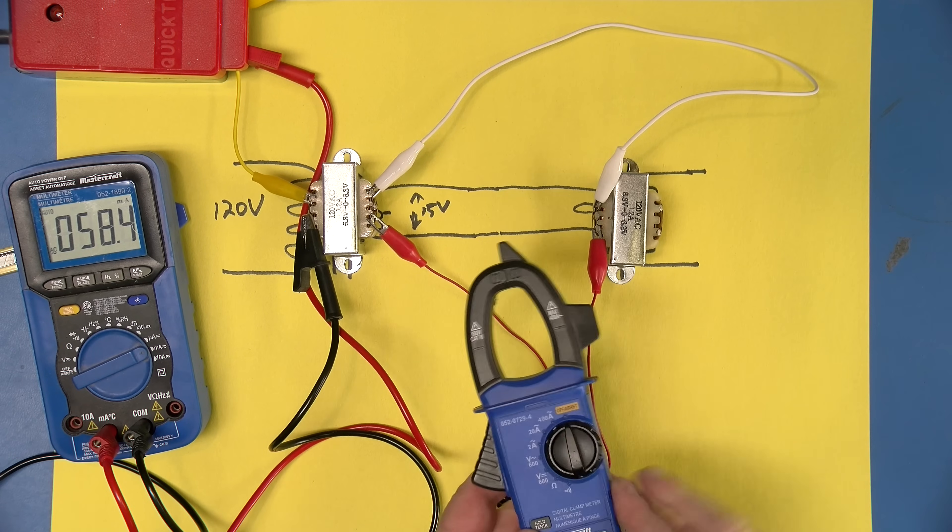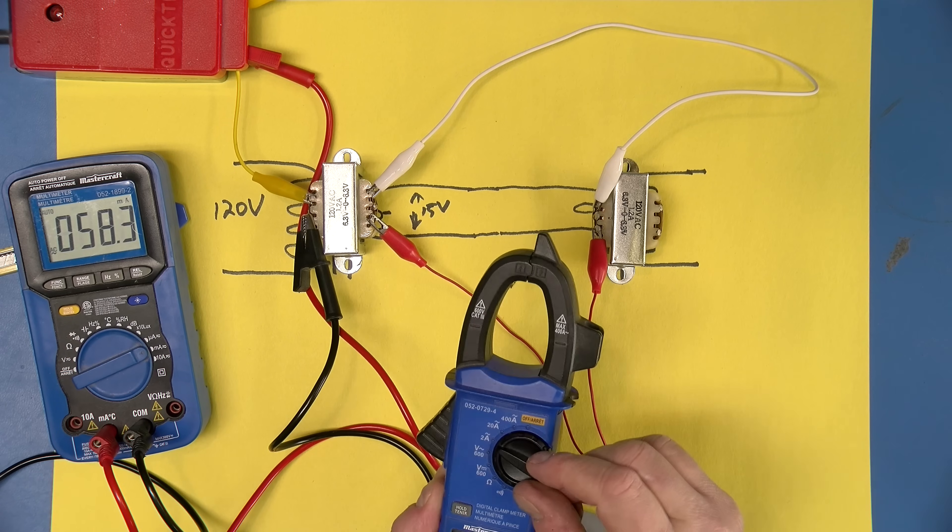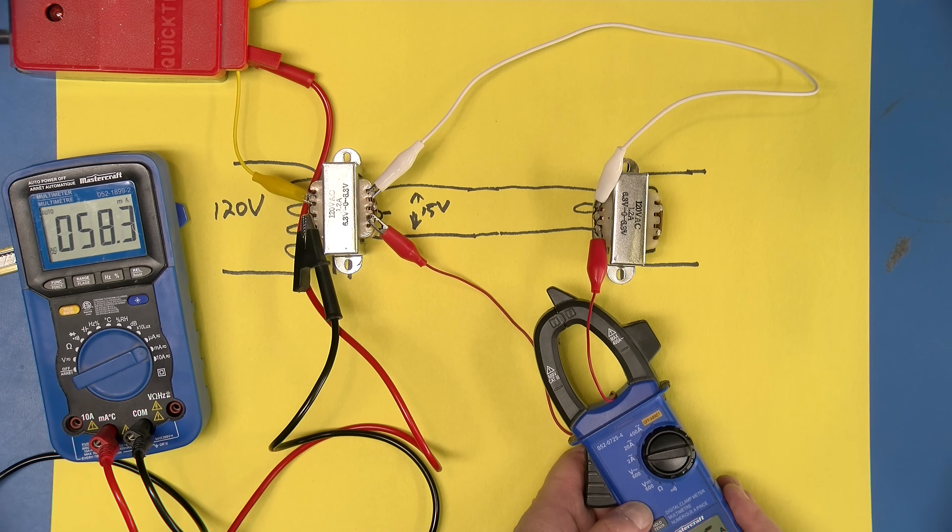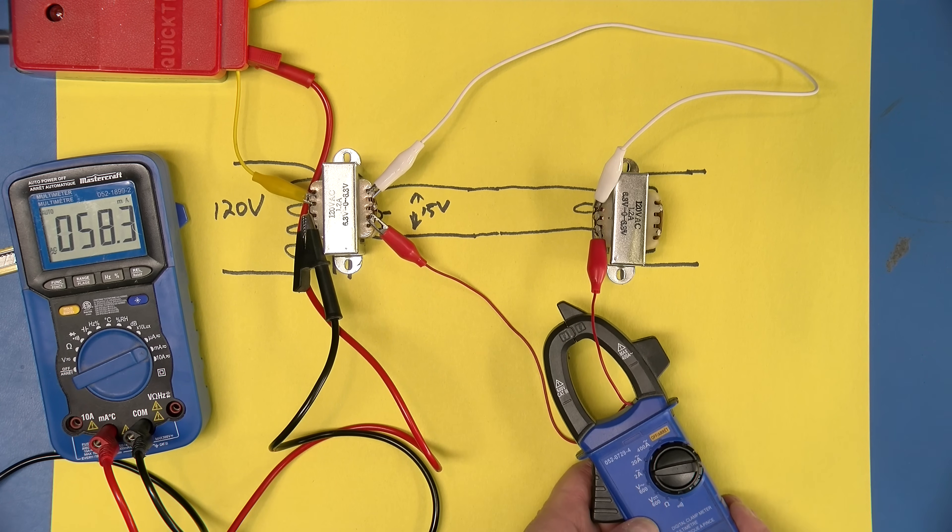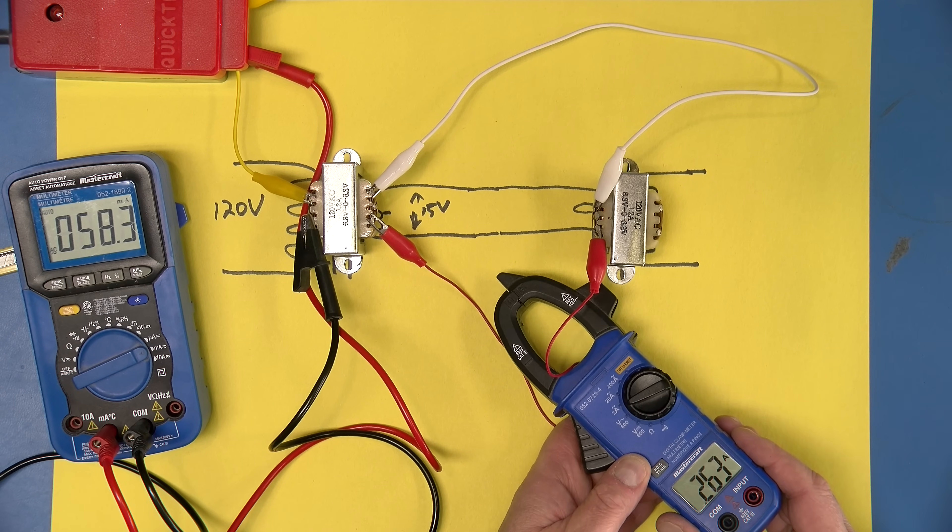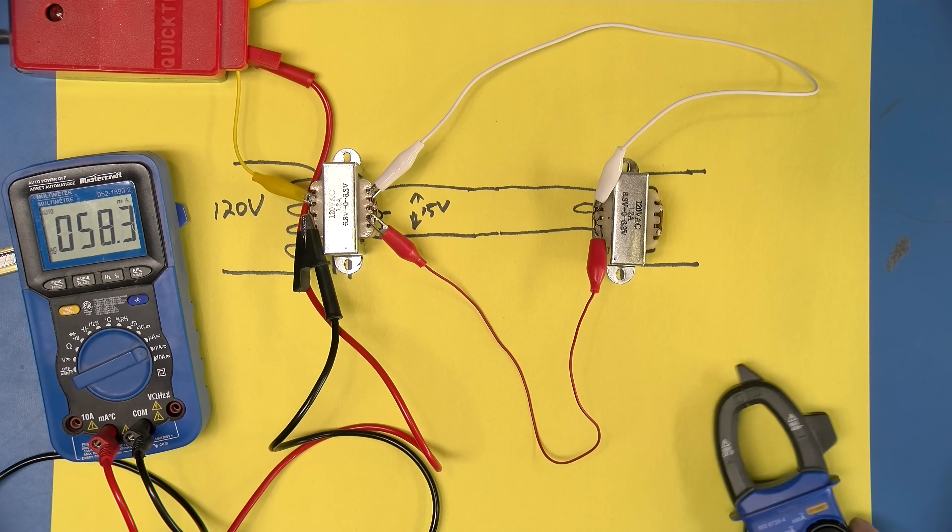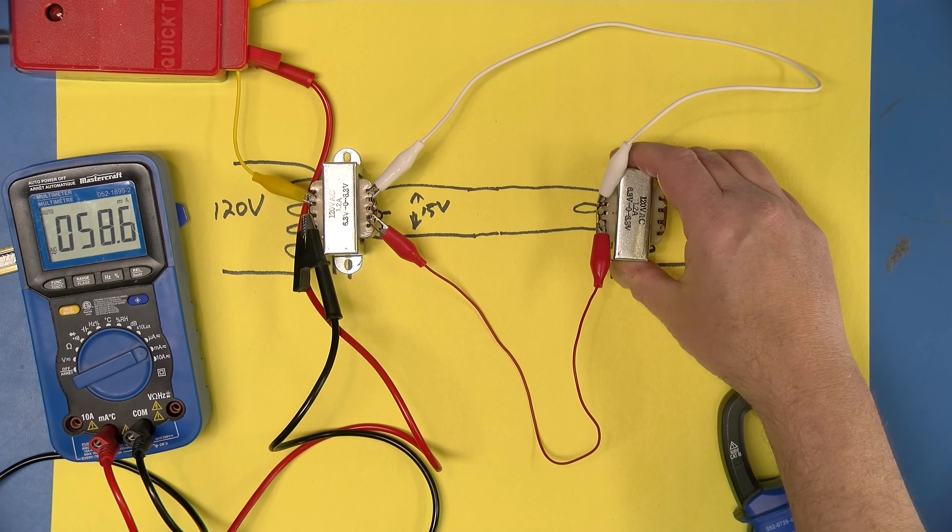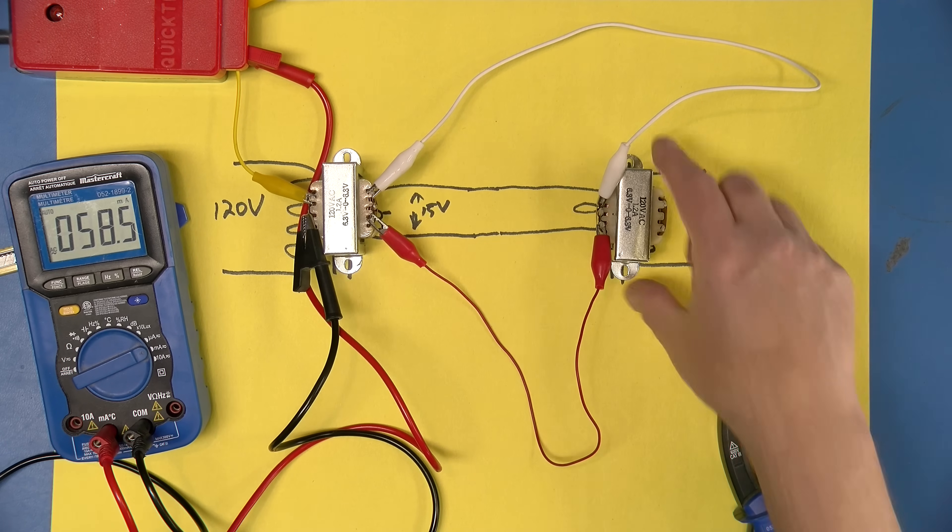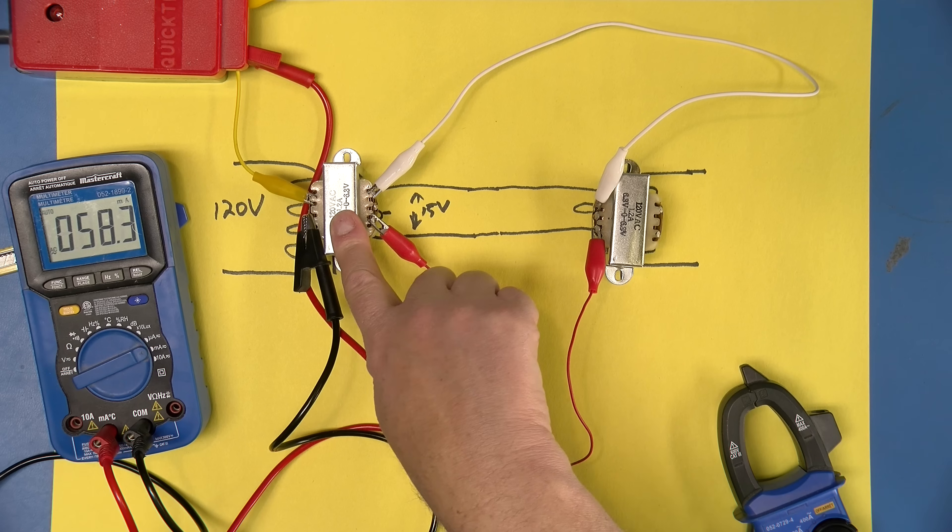And so what we'll do is use this nice little ammeter, clip-on ammeter, and see if we can measure what the current going into the second transformer is. And there we go, about 0.265 amps. That's almost exactly what we predicted. And all that really means is we are now energizing this transformer or magnetizing it in the same way we're magnetizing that one. But all of that magnetizing current has to come from the first transformer.